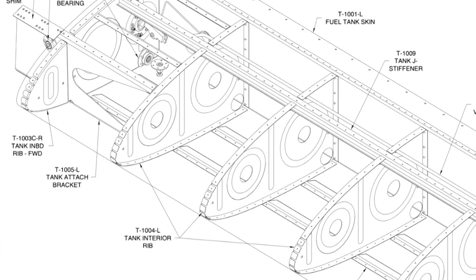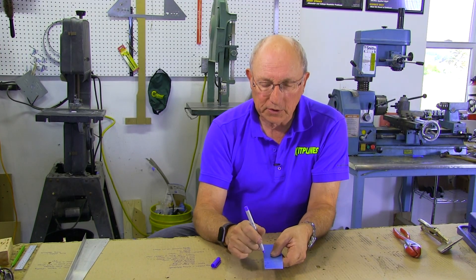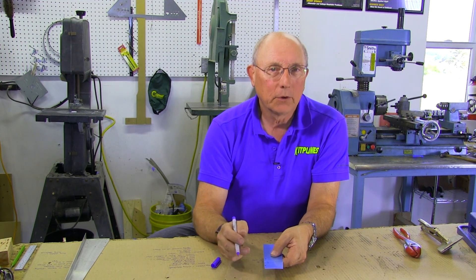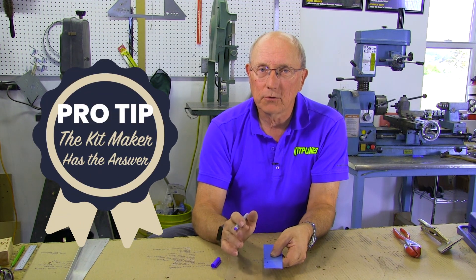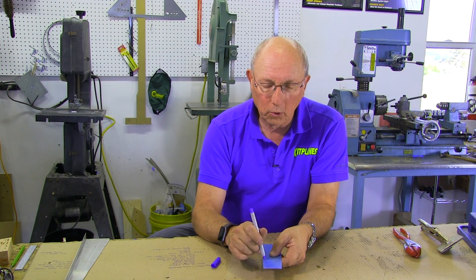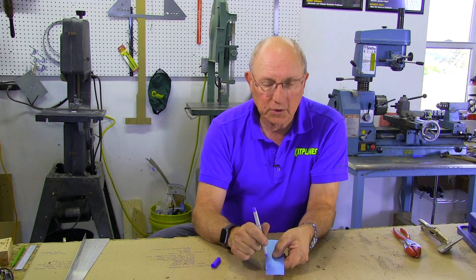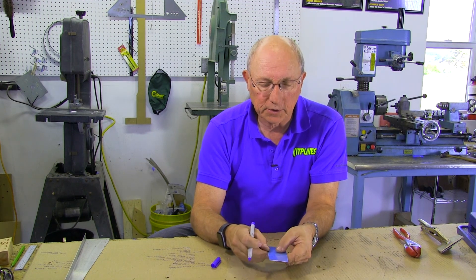What happens if you've got a rib underneath a skin, you've marked some holes, and once you take it all apart you notice that the rib has moved and a drilled hole is too close to the edge? There are ways to take care of that, but you want to check with your kit manufacturer to make sure it's a legal engineering fix. One way is to simply ignore that hole and drill a hole on either side with the proper edge distance — two rivets instead of one — making sure you also have appropriate edge distance from the bad hole. So that's one option for fixing edge distance violations.